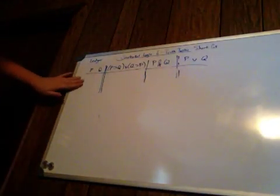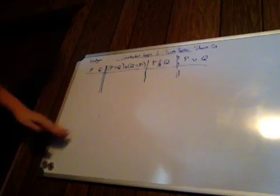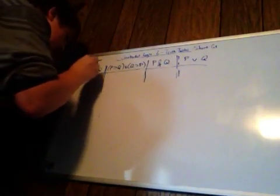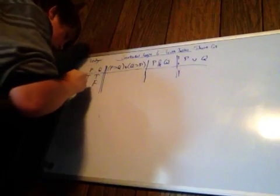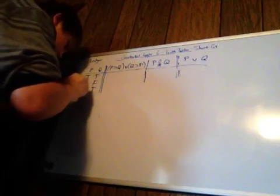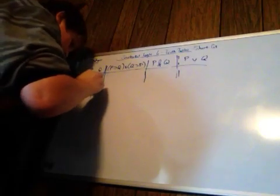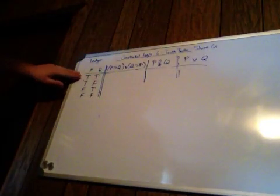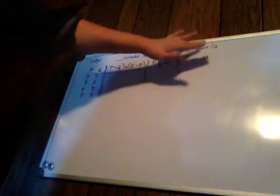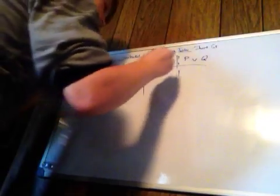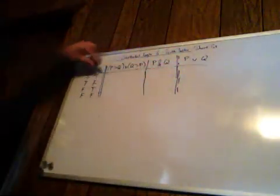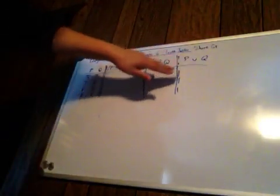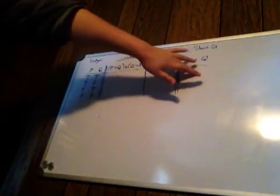This is our ledger with our P and Q, given our true value assignment. So first we have T, T, T, F, F, T, F, F. This true value assignment holds true for the whole row. I have a double line so we know this is the ledger, and a dashed line here so we know this is our conclusion, and these two are our premises.